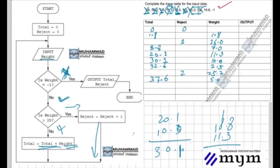The next input is 19.8. We write 19.8. Again, the weight is not minus one, not greater than 25, so it gets added. 37.6 plus 19.8 equals... let me calculate: 37.6 plus 19.8 gives us 57.4.